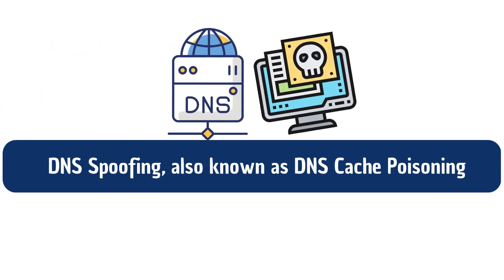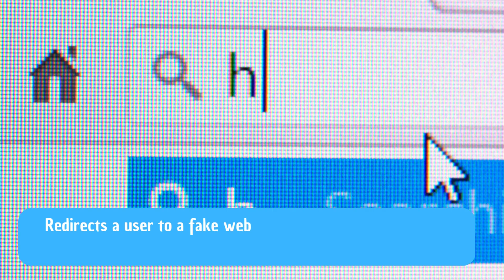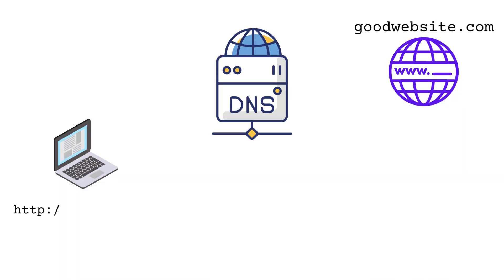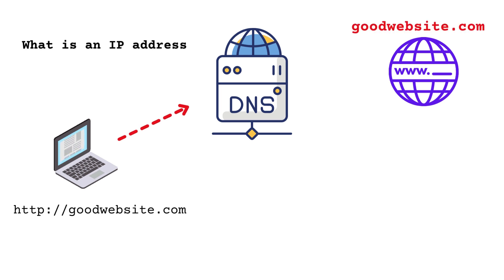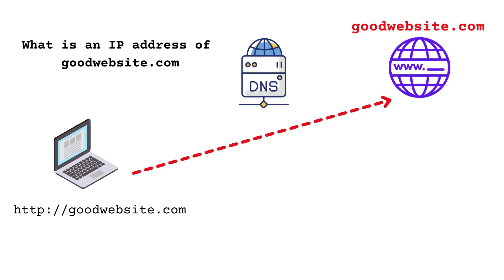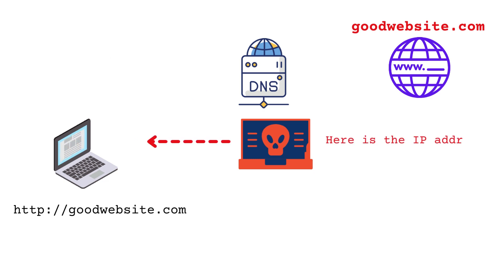DNS spoofing, also known as DNS cache poisoning, is another type of man-in-the-middle attack where the attacker redirects a user to a fake website or server by manipulating the domain name system resolution process. When a user types a website URL in their browser, the DNS resolver on their device sends a request to a DNS server to resolve the domain name to an IP address. If the DNS server has a valid mapping for the domain name, it returns the corresponding IP address to the user's device, which then uses it to connect to the requested website. In a DNS spoofing attack, the attacker intercepts the DNS request and sends a fake DNS response with a different IP address, redirecting the user to a fake website or server.